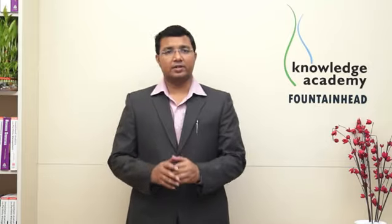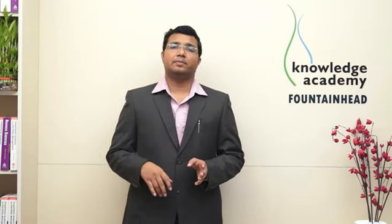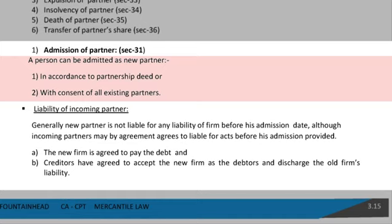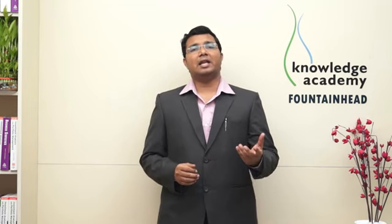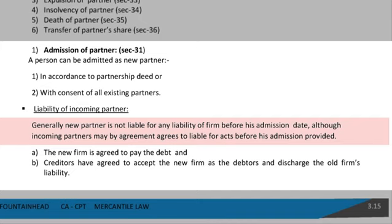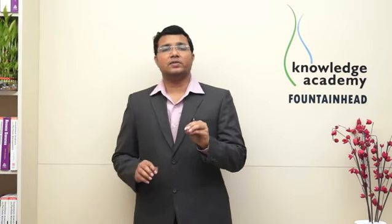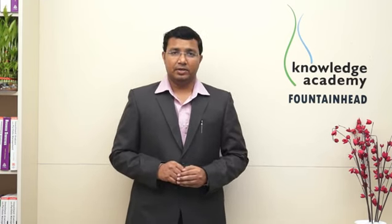Section 31 — Admission of Partners. A person can be admitted as a new partner in a partnership firm under two situations: in accordance with the partnership deed, where you go for a supplementary partnership deed; or with the consent of all existing partners. Regarding liability of an incoming partner: generally, a new partner is not liable for any liability of the firm before his admission. You need to check the date of joining — say the firm is since 1975 and a new partner joins on 1st January 2013, then his liability starts from 1st January 2013, not from 1975.